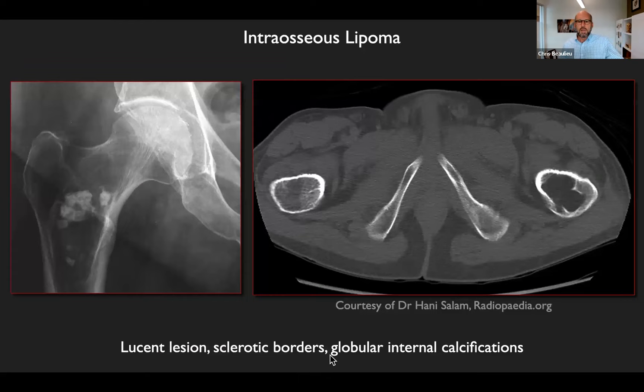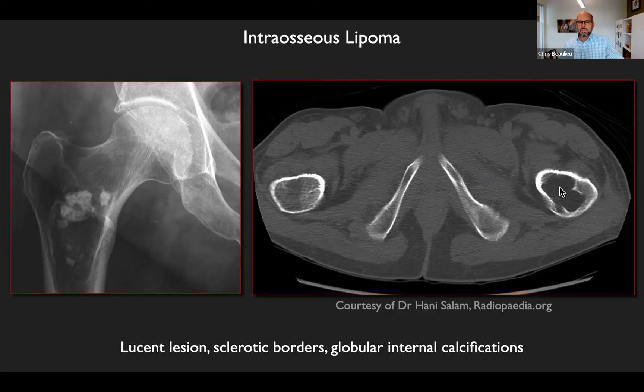Another finding you'll see is intraosseous lipomas, particularly in the femur. On radiograph there's a lucent lesion with sclerotic borders and rounded internal calcifications. On CT, a well-defined lesion occupying the trabeculae within the left femur compared to the normal right side, with internal density the same as fat. If you see fat in things, that's almost always going to be benign.